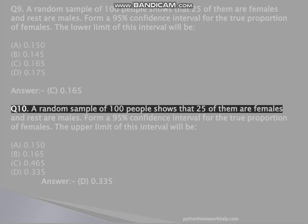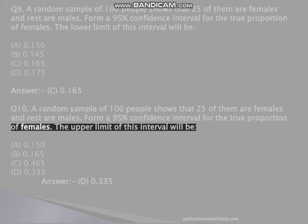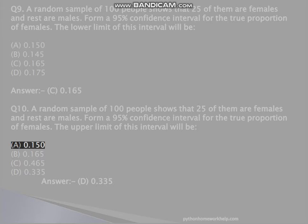Q10. A random sample of 100 people shows that 25 of them are females and rest are males. Form a 95% confidence interval for the true proportion of females. The upper limit of this interval will be: A, 0.150, B, 0.165, C, 0.465, D, 0.335. Answer: D, 0.335.